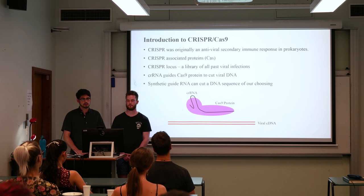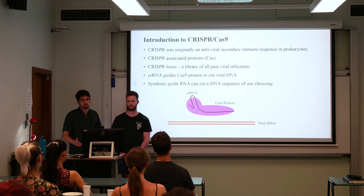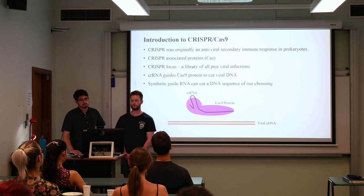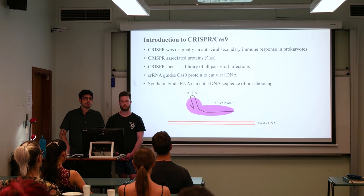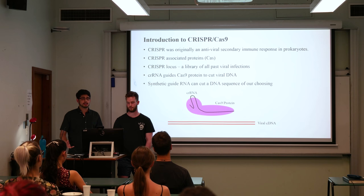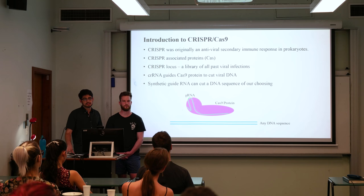CRISPR stands for Clustered Regularly Interspersed Short Palindromic Repeats and was originally an antiviral secondary immune response in prokaryotes. There are two elements of the CRISPR system: CRISPR-associated proteins (Cas proteins) and the CRISPR locus, which is essentially a library of all past viral infections. The CRISPR locus is transcribed into CRISPR RNAs that guide Cas proteins to cut revisiting viral DNA. Modern scientists have hijacked this to include synthetic guides that can direct the Cas protein to cut anywhere along the DNA sequence.